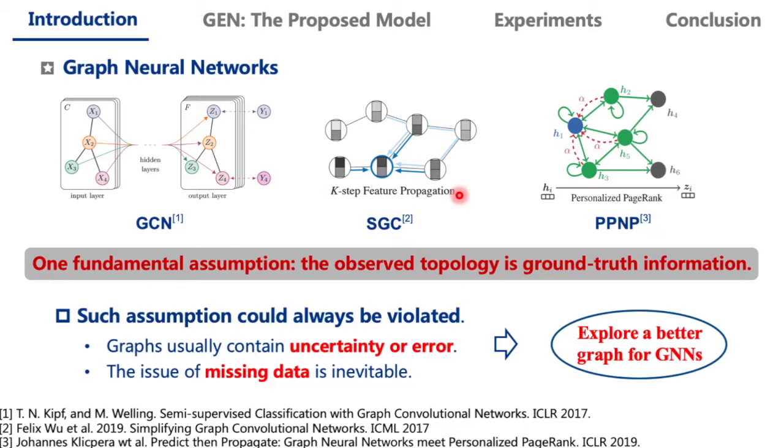In fact, as graphs are usually extracted from complex interaction systems, such assumptions could always be violated. One reason is that this interaction system usually contains uncertainty or error. Another reason is that the issue of missing data is inevitable.